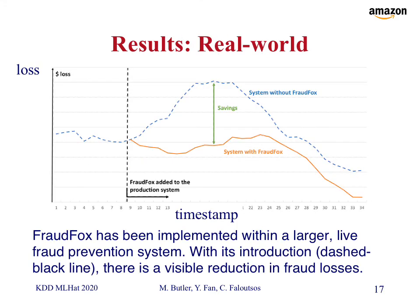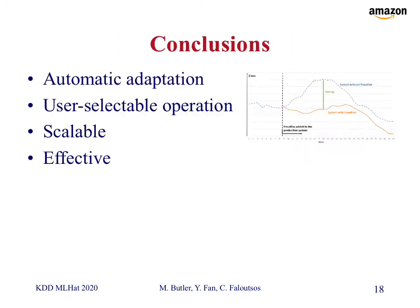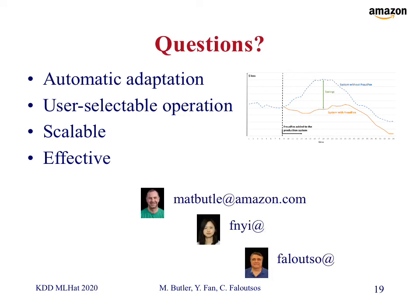In the real world, FraudFox has been implemented within a larger live fraud prevention system. With its introduction — marked by the dashed black line — there is a visible reduction in fraud losses. The system without FraudFox is shown as the blue dashed line, and the system with FraudFox is shown as the solid orange line. There is a clearly visible reduction in losses once it was introduced. In conclusion, FraudFox provides automatic adaptation, user-selectable operation, and is scalable and effective. Thank you very much. This concludes our discussion today on FraudFox. Please enjoy the rest of the workshop and we can now take live questions.